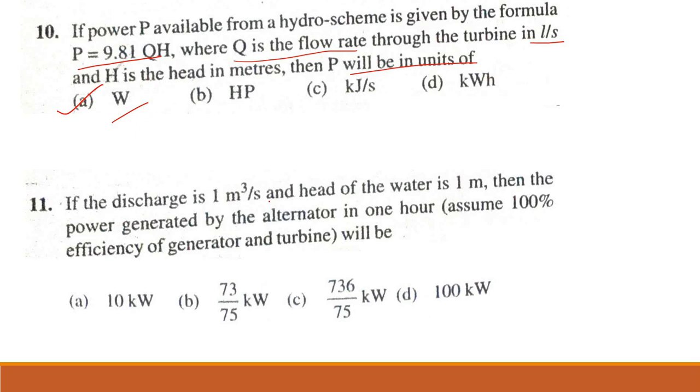Problem 11. If the discharge is 1 m³/s and head of water is 1 meter, then the power generated by the alternator in 1 hour, assuming 100% efficiency of generator and turbine will be: P = 0.736/75, W = 1000, Q = 1, H = 1, efficiency = 1. The answer is 736/75 kilowatts. Option C is correct.